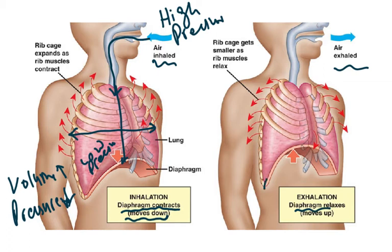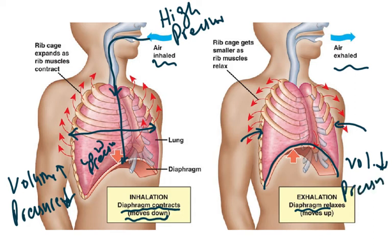When you exhale, it is the opposite. The diaphragm relaxes and goes back up. The internal intercostal muscles contract and the rib cage moves downwards and inwards, so the volume decreases. When the volume decreases, the inside pressure increases, and this causes the air to move out from high pressure to low pressure. Inhaling and exhaling is mainly a question of volume change. A dead person does not breathe because the intercostal muscles are not working, so there is no change in the volume of the thorax.